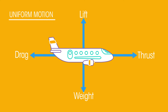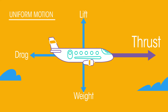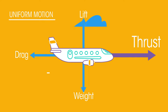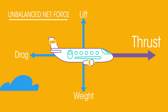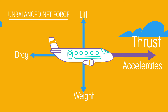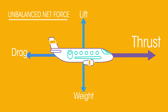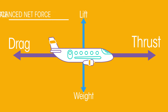If the plane wants to move faster and increase its velocity, then the thrust force pushing the plane forward needs to increase. It becomes larger than the force of air resistance and creates an unbalanced net force. The plane now accelerates, no longer moving with uniform motion. Drag increases with velocity, so very soon the plane will have balanced but larger forces again and its velocity remains constant but higher than before.